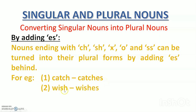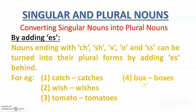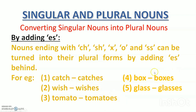Let's see more examples. Wish ends with SH, so ES is used: wishes. Tomato ends with O — one tomato, many tomatoes; after O we put ES. Box — ek dabba; if there are many, boxes; after X we put ES. And glass — one glass, many glasses. In all these five cases, we put ES behind because these nouns end with CH, SH, X, O, or SS. Remember this, children.